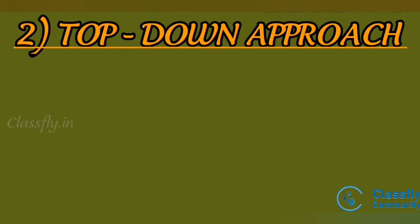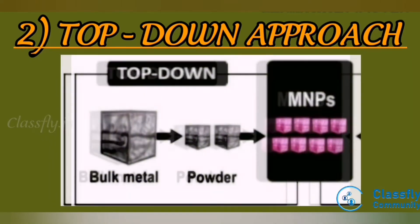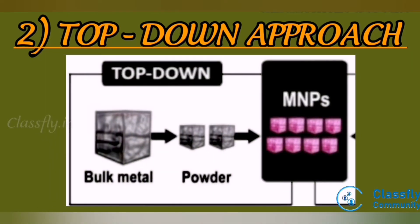Second one is the top-down approach. It is essentially the breaking down of a system to gain insight into its compositional subsystems in a reverse engineering fashion. In the top-down approach, an overview of a system is formulated, specifying but not detailing any first-level subsystem. Each subsystem is then refined in yet greater detail, sometimes in many additional subsystem levels until the entire specification is reduced to base elements.